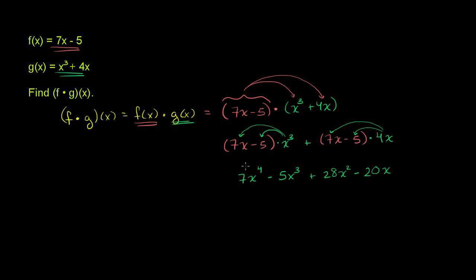And let's see if we can simplify this. We only have one fourth degree term, one third degree term, one second degree term, and one first degree term. So actually you can't simplify this anymore, and we're done. This is the product of those two function definitions. This is f times g of x. It is a new function created by multiplying the other two functions.